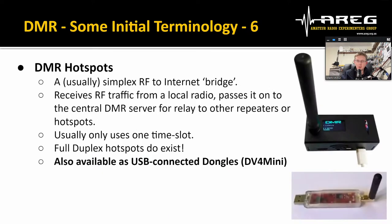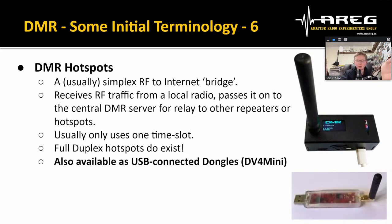DMR hotspots — while repeaters operate full duplex with separate TX and RX frequencies, hotspots are generally simplex. They act as an RF-to-internet bridge to the central IPSC server, receiving traffic from your radio and passing it to the server, which relays it to other repeaters or hotspots depending on talk group. Because it's simplex, it only uses one of the two time slots. A hotspot can be a standalone device — like a shield for a Raspberry Pi Zero — or you can get ones that plug in via USB.